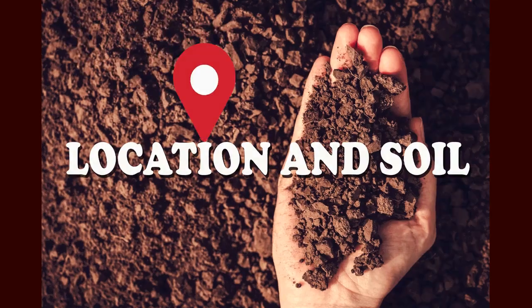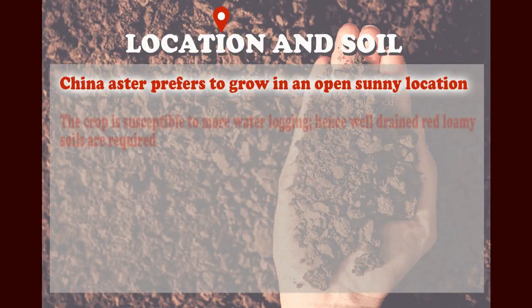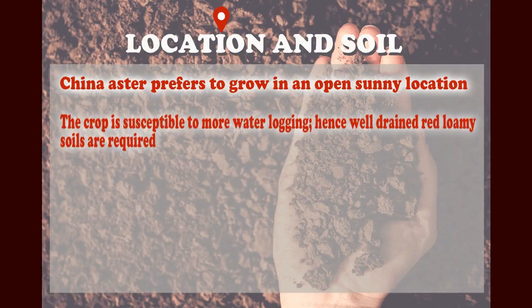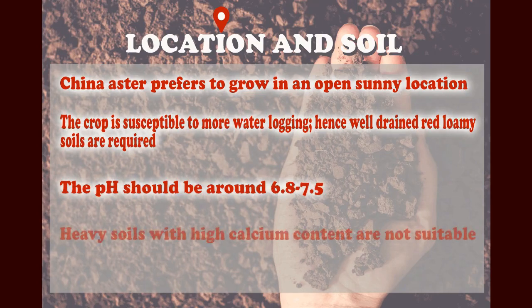China Aster prefers to grow in an open sunny location. The crop is susceptible to waterlogging, hence well-drained red loamy soils are required. The pH should be around 6.8 to 7.5. Heavy soils with high calcium content are not suitable for growing aster.